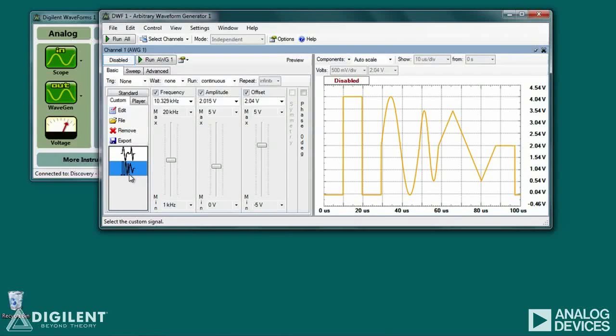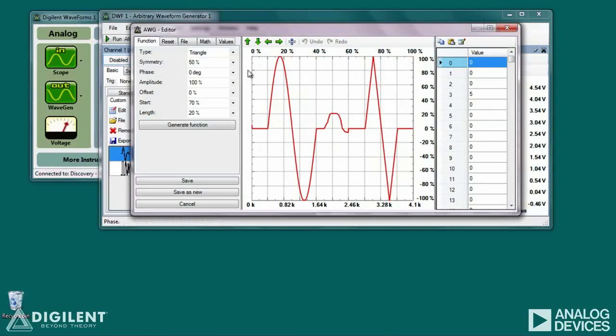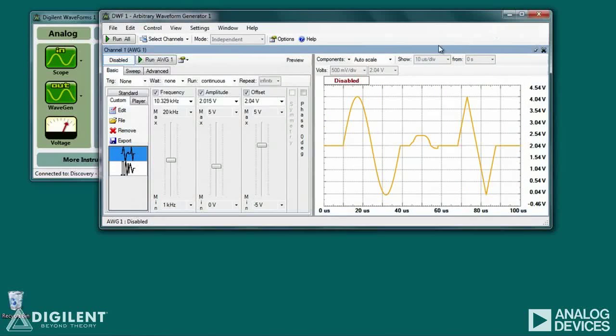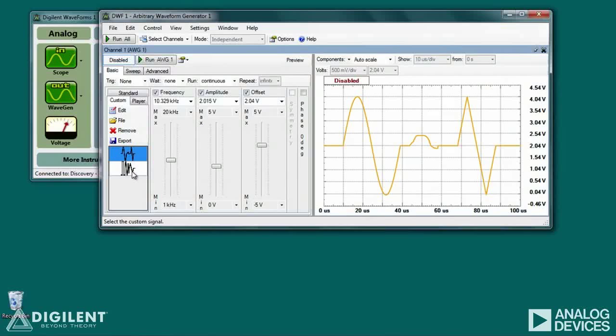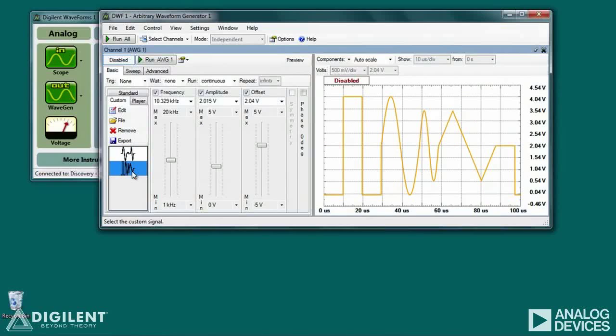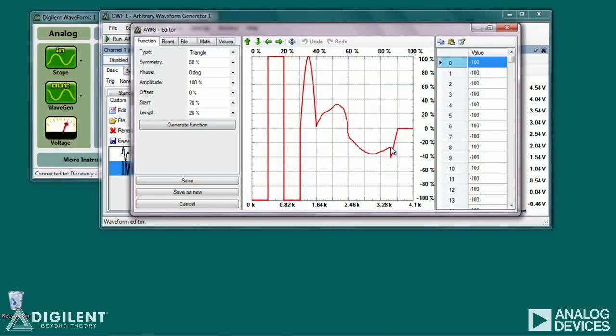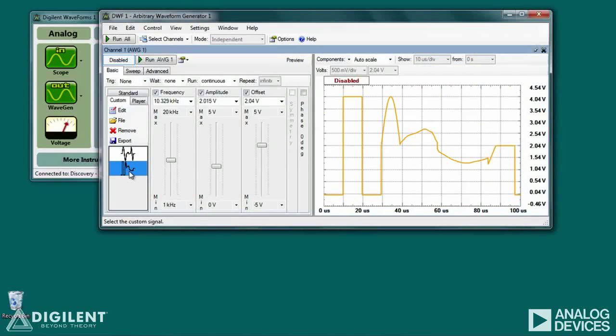If you want, you can edit any of the waveforms in this list by selecting the waveform and clicking on Edit. For example, we'll modify our imported file by sketching a new waveform over part of the existing waveform. The editor does allow you to draw waveforms directly by clicking and dragging with your mouse.